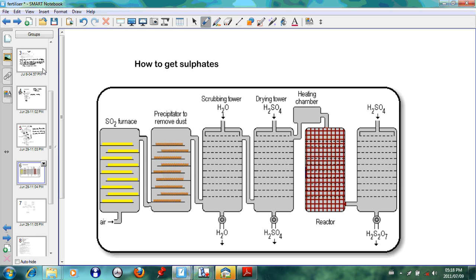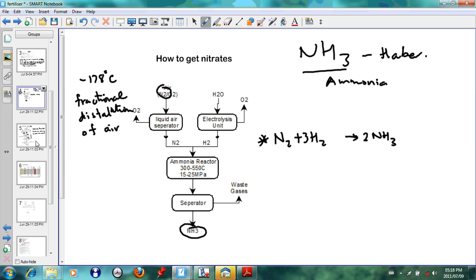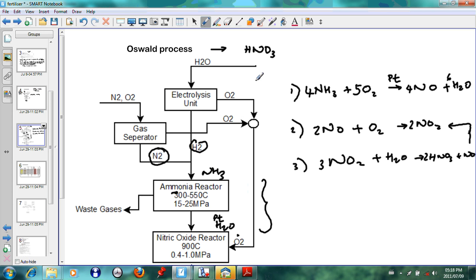Assalamu alaikum warahmatullahi wabarakatuh. We are continuing with fertilizers. In our last lesson we discussed the Haber process, which was the manufacture of ammonia, and we also discussed the Oswald process, which is the manufacture of nitric acid.